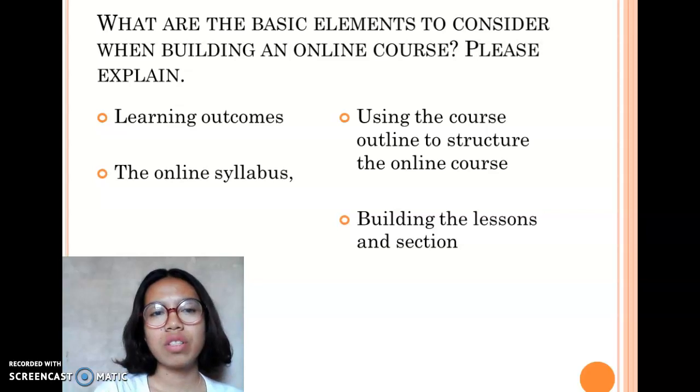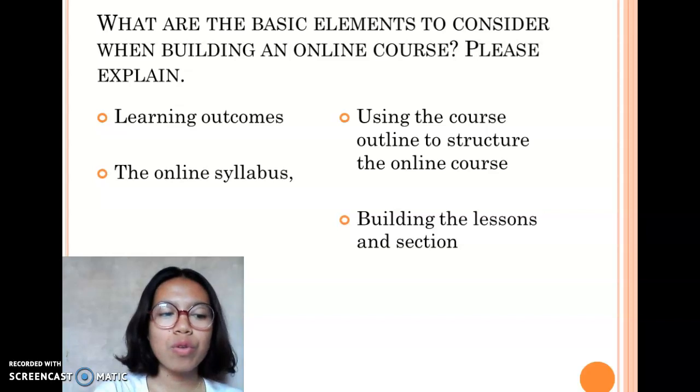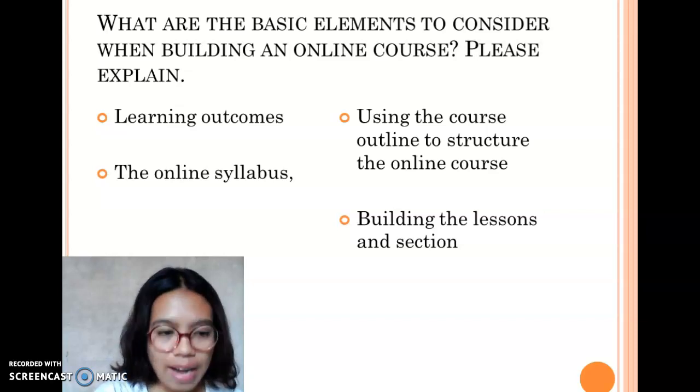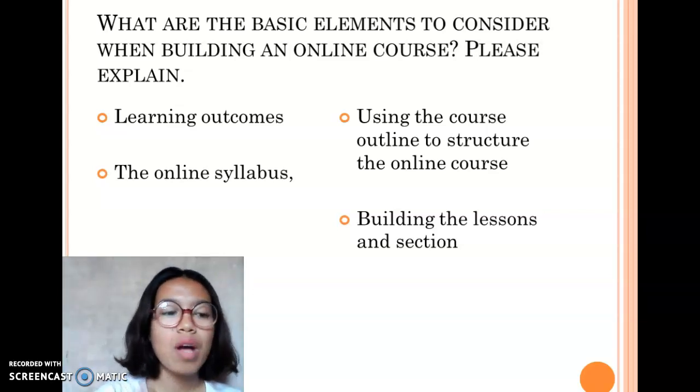And the next question is what are the basic elements to consider when building an online course? Please explain. The first one is learning outcomes. Learning outcomes are the course of the process that creates programs. And the next is the online syllabus. The online syllabus contains a very defined course outline and thorough explanation of how the online course is organized and will operate.